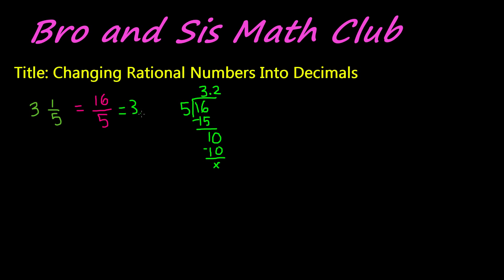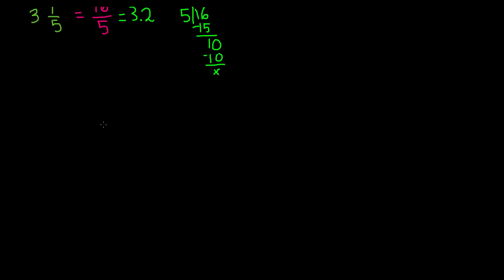We know that this is a rational number because this is a terminating decimal, and a terminating decimal does not repeat. So 3.2 — this also proves that 3 and 1 fifths is a rational number. This is how we change a rational number into a decimal. Let's go ahead and do another example.